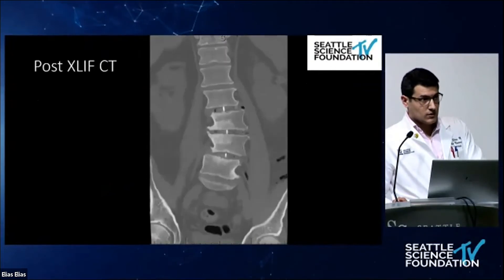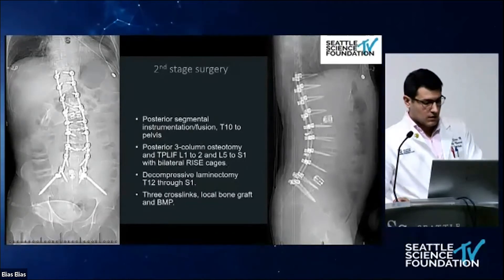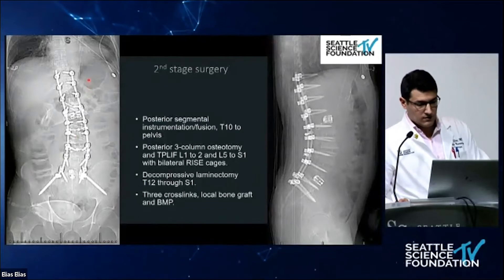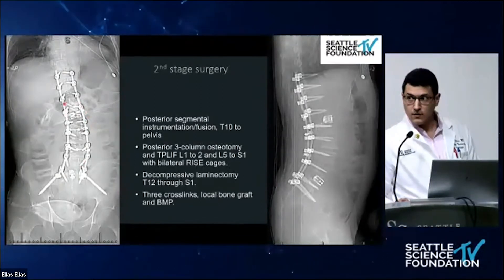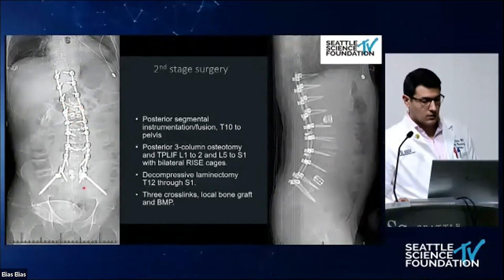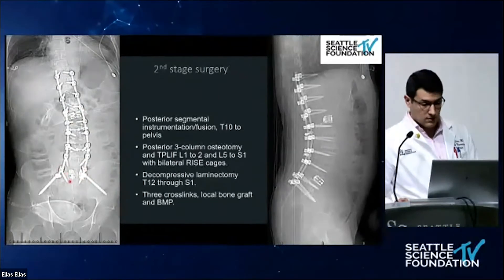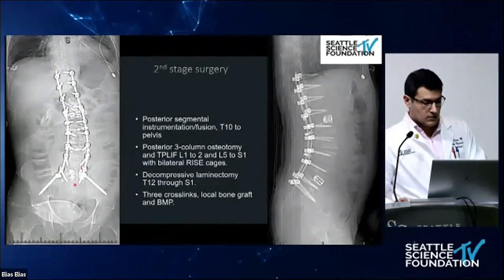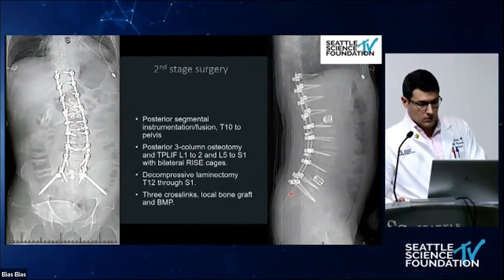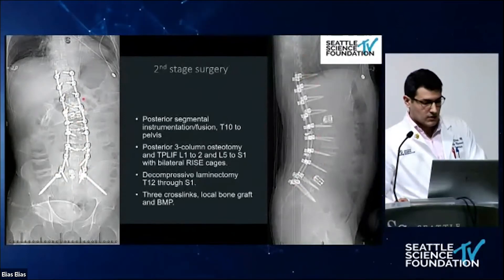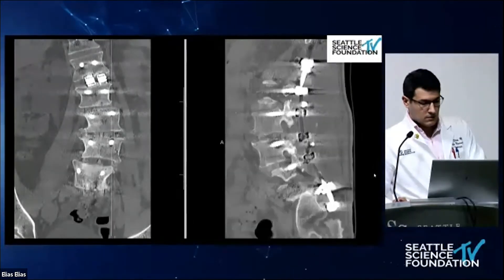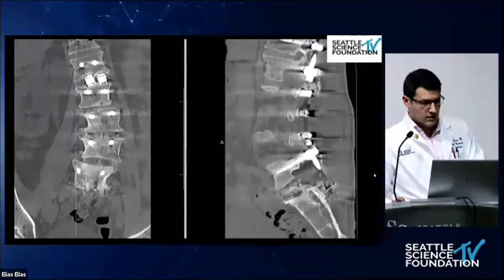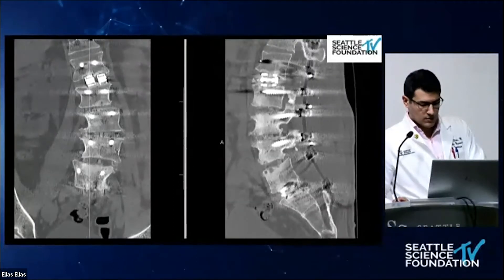The next day, we took the patient and did a posterior approach. We performed posterior instrumental fusion from T10 to the pelvis, a posterior three-column osteotomy over the L1-L2 area, and inserted two RISE cages over L1-L2 and two RISE cages over L5-S1. On the post-op x-ray, we did not get adequate coronal correction — we got some correction, but it was not enough. The post-op CT scan shows the RISE cages and XLIF cages, and on the left side you can see the coronal deformity that was not properly corrected.